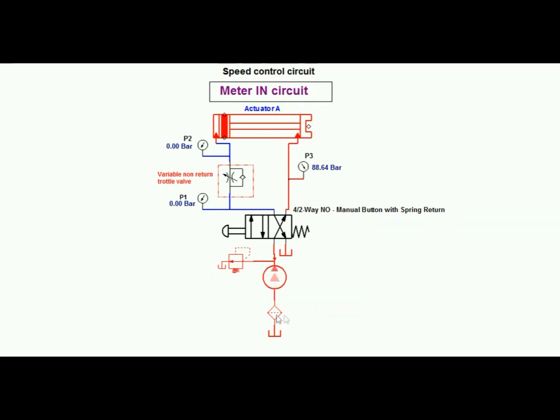Figure shows a meter in flow control circuit for a double acting cylinder. Notice that a bypass check valve forces fluid through an adjustable flow control valve just before it enters the actuator.